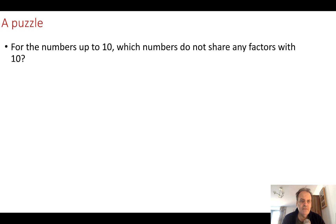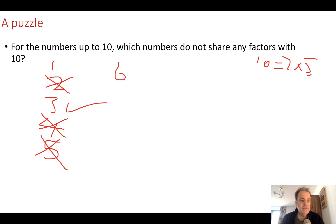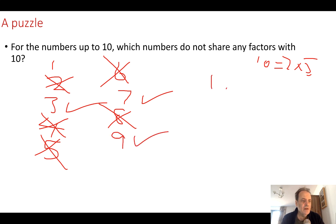10 is equal to 2 times 5, so those are the two prime factors. Any number apart from primes is made up from a multiplication of prime numbers. If we try 1 — that's okay. 2 doesn't work. 3 works. 4 is 2 times 2, so that doesn't work. 5 doesn't work. 6 doesn't work because it's 2 times 3. 7 works. 8 — nope. 9 works. So we have 1, 3, 7, and 9.